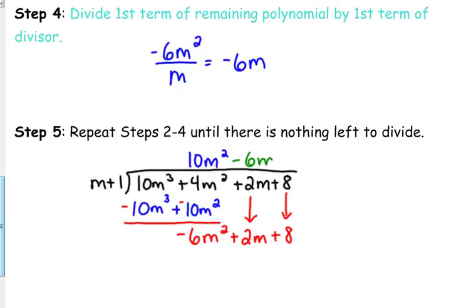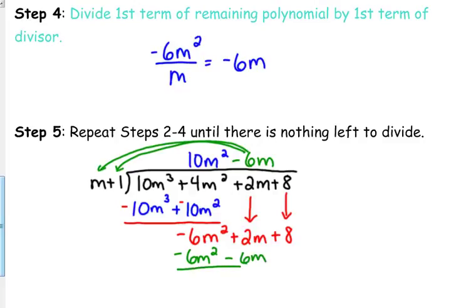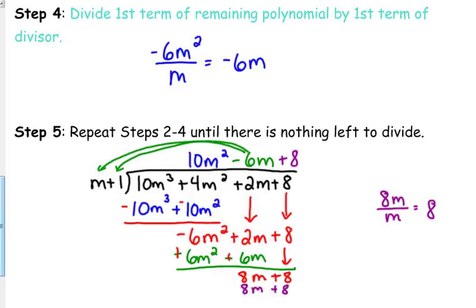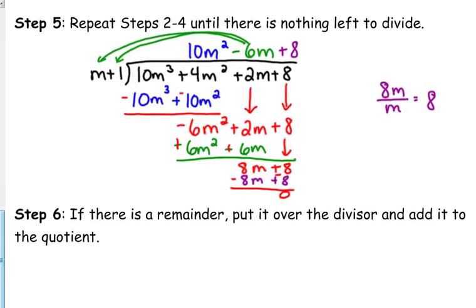Negative 6m goes beside the 10m squared, and we repeat the same process. We multiply negative 6m by m to get negative 6m squared, and by 1 to get negative 6m. Change our signs and add: negative 6 plus 6 is 0, and 2 plus 6 is 8m. Bring down the 8. Divide 8m by m — that leaves us with 8. Multiply: 8 times m is 8m, and 8 times 1 is 8. Change our signs and add, and we get a remainder of 0.